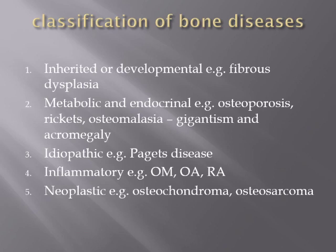In acromegaly, only the hands and feet become greatly enlarged compared to the body, and the lower jaw enlarges causing prognathism — all features of acromegaly facies. Other categories include idiopathic bone disease such as Paget's disease of the bone, of unknown etiology. The inflammatory category includes osteomyelitis, osteoarthritis, and rheumatoid arthritis.